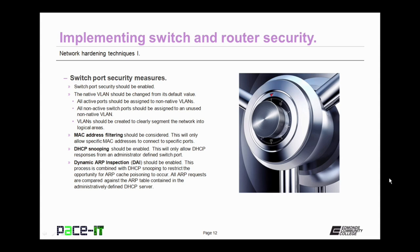Under switch security measures, switch port security is vital. Switch port security should be enabled — all enterprise switches are capable of having security measures enabled at the port level. Also, the native VLAN should be changed from its default value. All active ports should be assigned to non-native VLANs, and all non-active switch ports should be assigned to an unused non-native VLAN. VLANs should be created to clearly segment the network into logical, secure areas. MAC address filtering should also be considered, which will only allow specific MAC addresses to connect to specific ports.